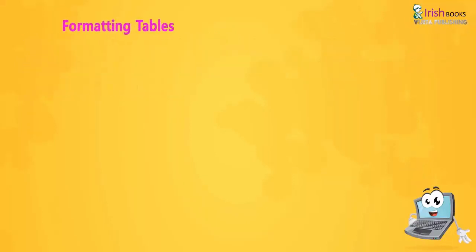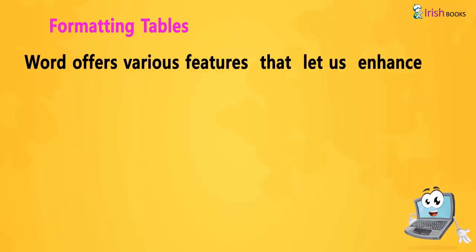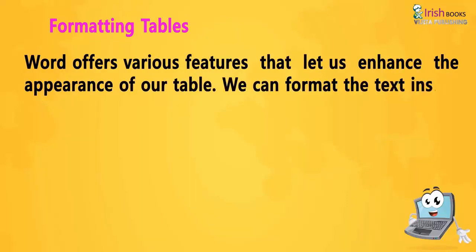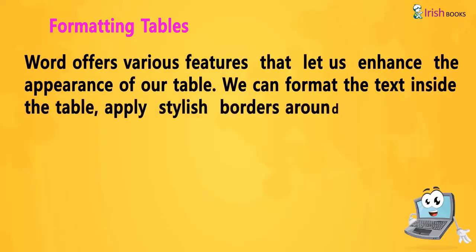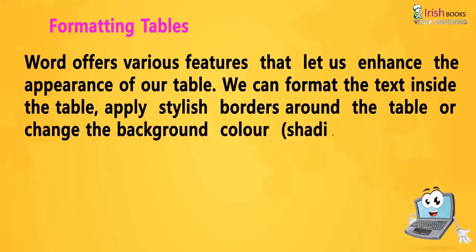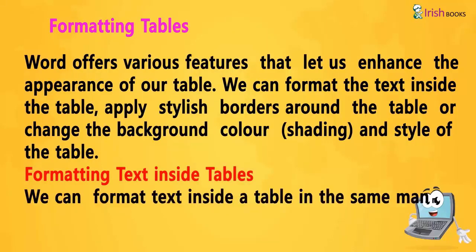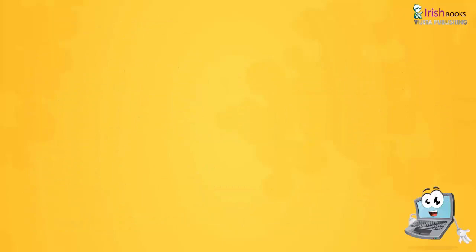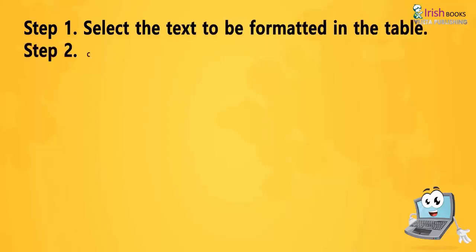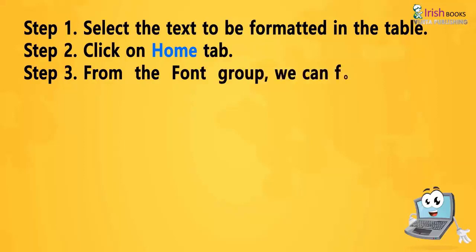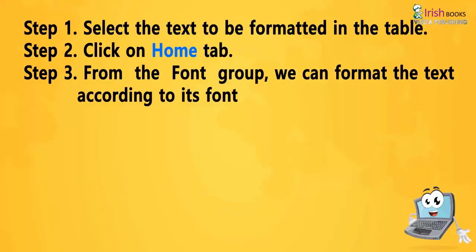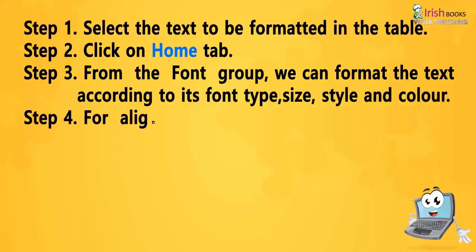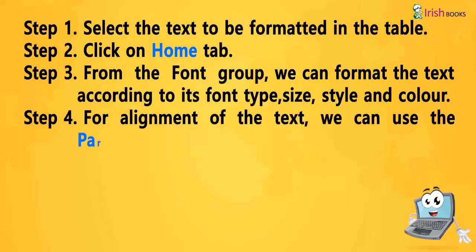Formatting Tables. Word offers various features that let us enhance the appearance of our table. We can format the text inside the table, apply stylish borders around the table, or change the background color, shading and style of the table. Formatting text inside tables: We can format text inside the table in the same manner as any other text in a Word document. Step 1: Select the text to be formatted in the table. Step 2: Click on the Home tab. Step 3: From the Font group, we can format the text according to its font type, size, style and color. Step 4: For alignment of the text, we can use the Paragraph group in the Home tab.